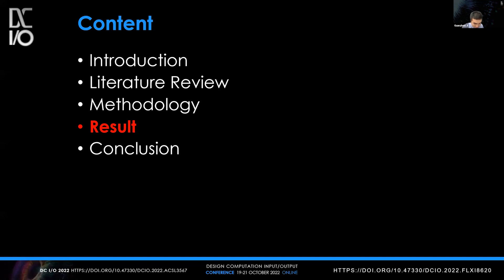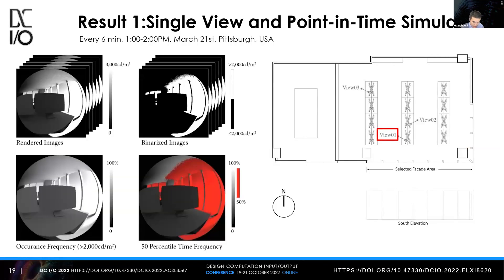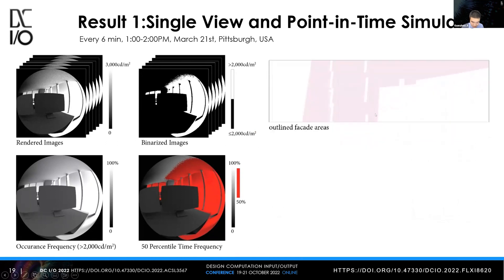For Result 1, we used a single view position and ran simulation every 6 minutes from 1 to 2 p.m. on March 21st in Pittsburgh, USA. Following the workflow, the result shows where 2,000 candela per meter square occurred over 50% of the time, and we then project those pixels onto the façade surface. That is the potential glare area.